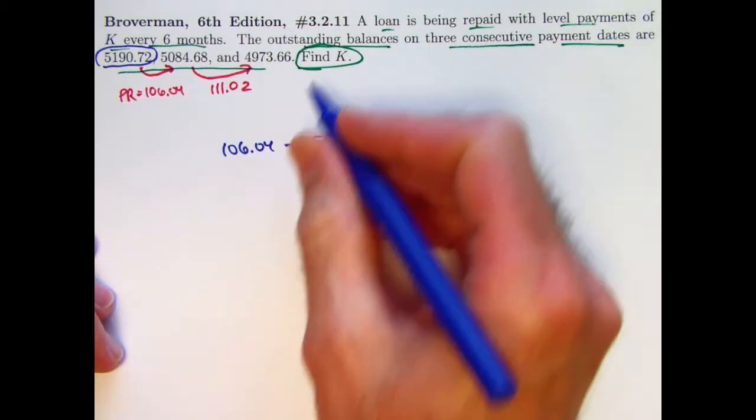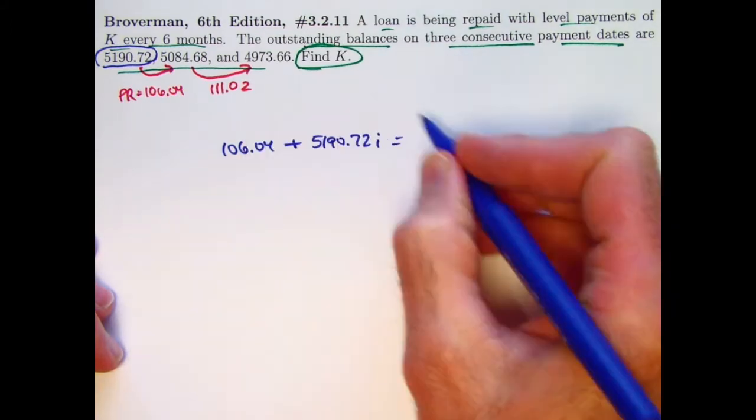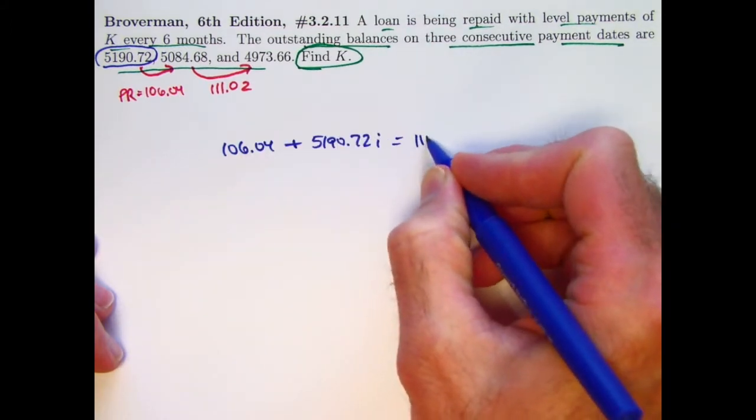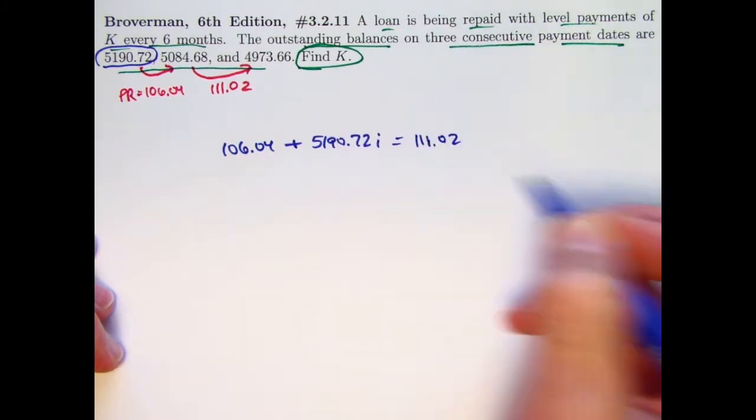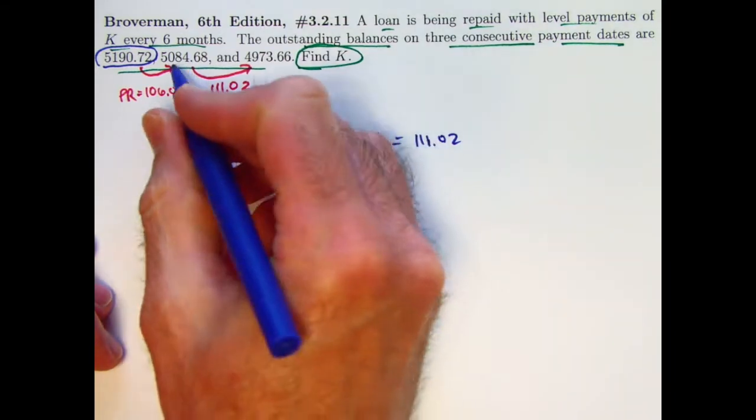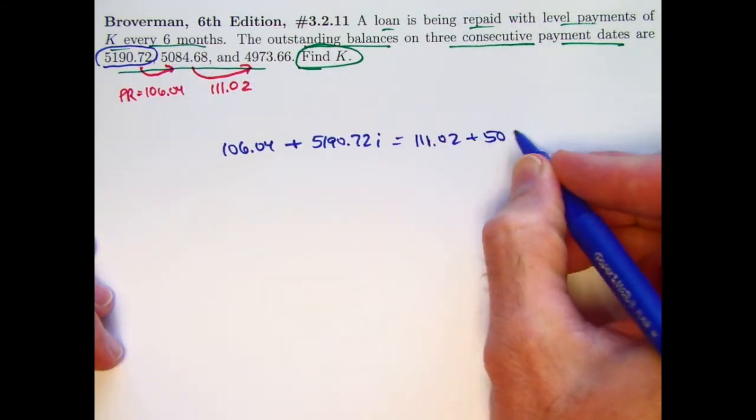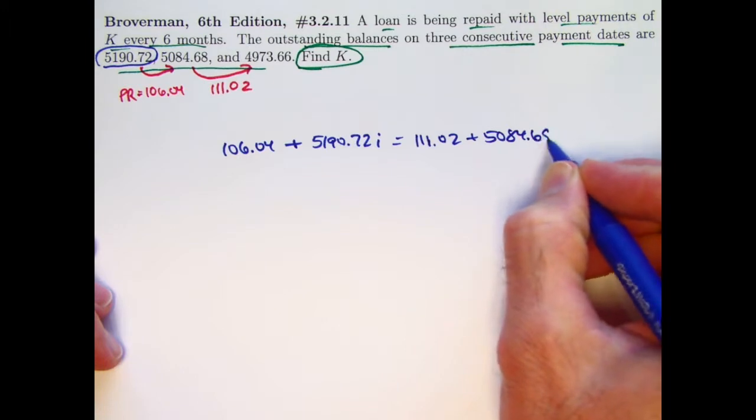Same thing with the other, and they should be the same. The principal reduction component in the next period is 111.02, and the interest component is 5084.68 times the interest rate I.